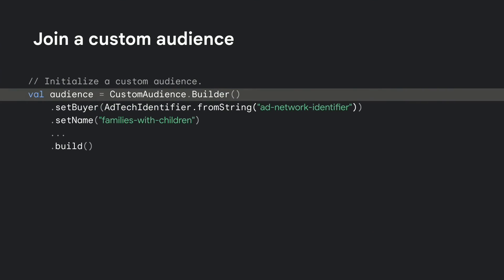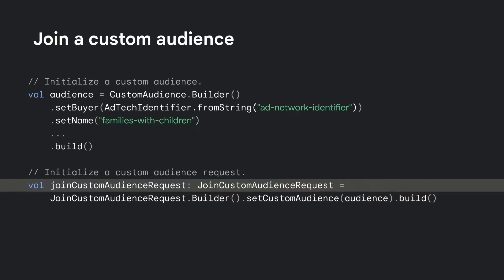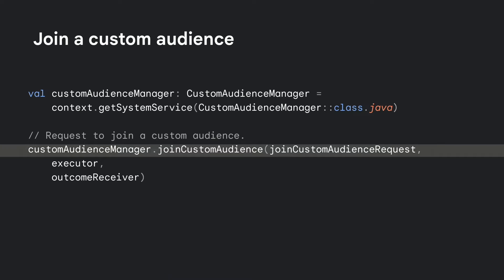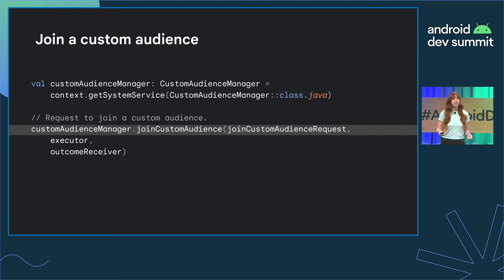This can be accomplished with the Fledge API by creating a custom audience. This will include information such as the name of the ad network that manages your ads, where the ad network hosts your ad content, and the name of the custom audience itself — in this case, families of children. Once the custom audience has been defined, it can be used to create a custom audience request. Then the custom audience manager can be instantiated and used to make the call to join custom audience with the request that was just created. Now this device is part of the families with children audience.